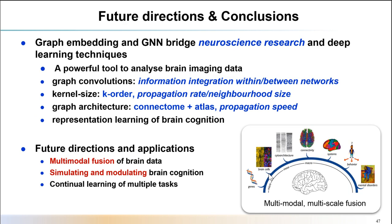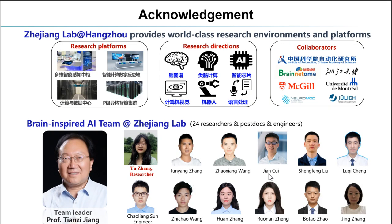Here is a short summary of what I have talked about today. I have shown that graph embedding and graph neural networks provide a powerful tool to analyze brain imaging data. We also provided an optimized architecture for brain encoding and decoding, and gave some insights into the representation learning of brain cognition. In the future, we will focus on another two topics of neural AI: the simulation and modulation of brain cognition using AI. Stay tuned and looking forward to sharing with you next time. I would like to acknowledge the Brain-Inspired AI team at Zhejiang Lab. Our team leader is Professor Chen Xiaolin, who was just elected as chair of OHBM last year. Our team is dedicated to building computational models of brain organization, cognitive functions, and brain disease. We welcome all candidates in the field of neuroscience to join our lab. Thank you.